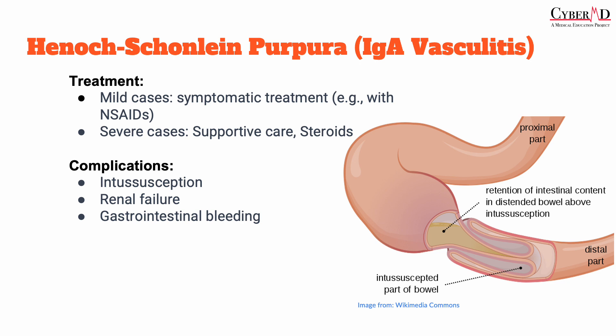The prognosis of HSP is generally very good. Most patients recover within a month with supportive care — NSAIDs, rest, and hydration. However, complications can occur, including nephrotic syndrome and intussusception. Other rare complications include seizures if the patient is very febrile, or hypertensive encephalopathy.